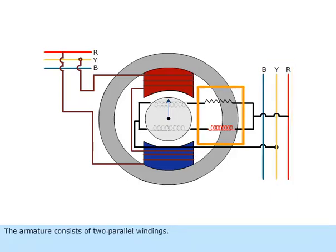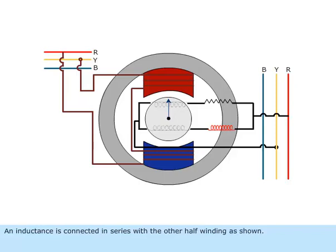The armature consists of two parallel windings. A resistance is connected in series with one half winding. An inductance is connected in series with the other half winding as shown.